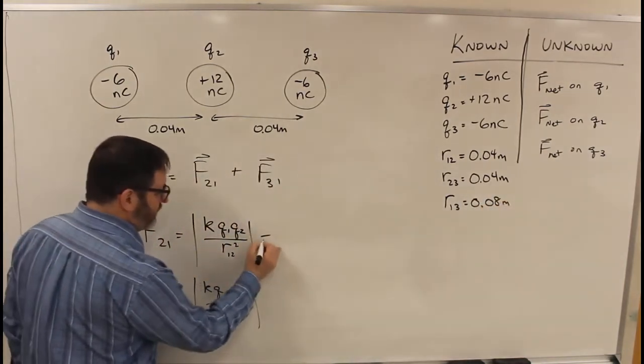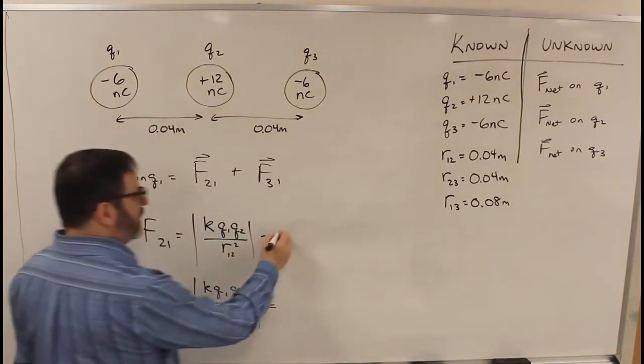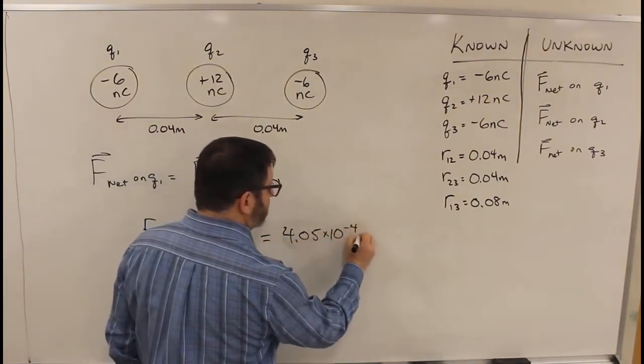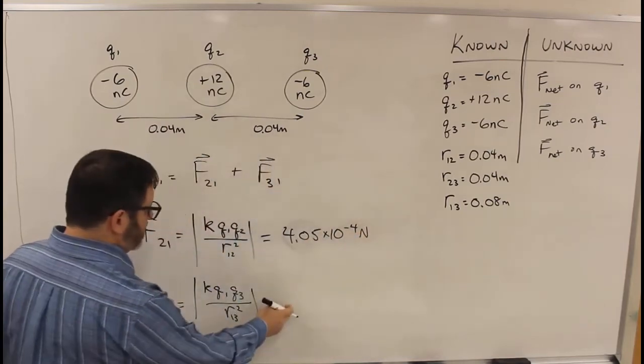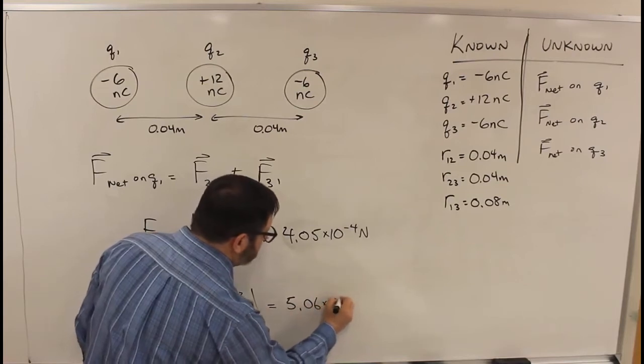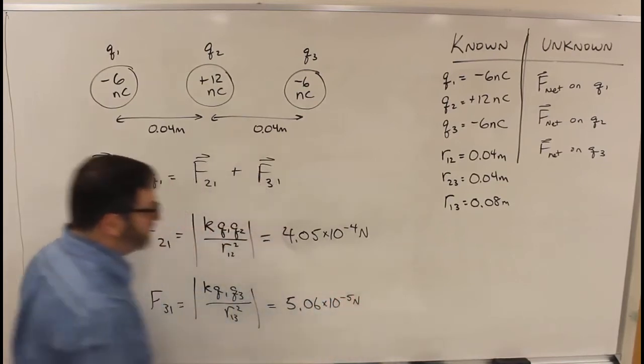So we can find both of these: 4.05 times 10 to the minus 4 newtons, and this one, 5.06 times 10 to the minus 5 newtons.